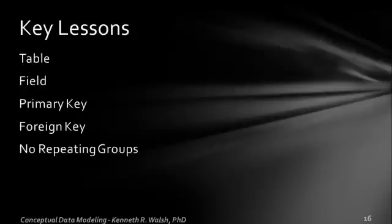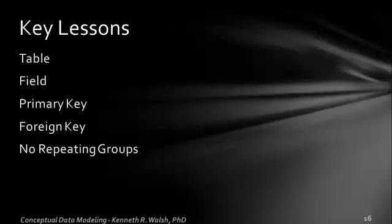Some key takeaways from this presentation: a table represents a major class of information being stored in our database. A field is an atomic piece of information within a table that makes up the table's detail. A primary key is a unique identifier for records within one table. A foreign key is used when one table needs to reference or point to another table. And remember, we can have no repeating groups — if you see a situation that looks like a repeating group, it probably means a new table needs to be added.